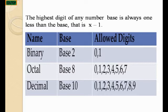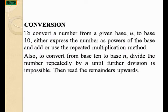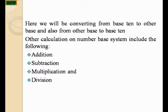Base 10, which we usually use, has digits 0, 1, 2, 3, 4, 5, 6, 7, 8, and 9 — the last digit available. Now we move to conversion. To convert a number from a given base n to base 10, either express the number as powers of the base and add, or use the repeated multiplication method. To convert from base 10 to base n, divide the number repeatedly by n until further division is impossible, then read the remainders upward. Other calculations on a number base system include addition, subtraction, multiplication, and division.